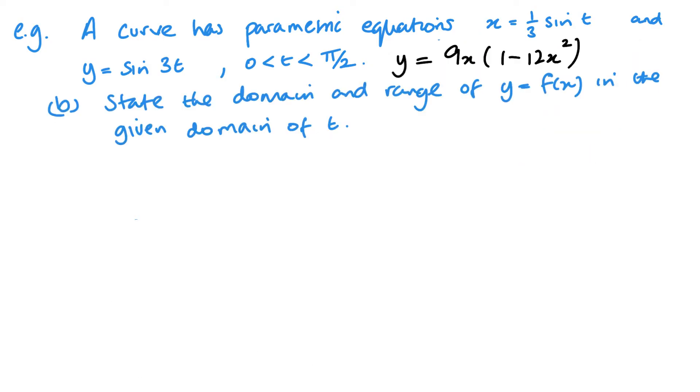We want to find the domain and range. We need to use this domain of t, which we can see is between 0 and pi by 2. If I look at my x values, when I substitute 0 in, it's going to give me 0. And when I substitute pi by 2 in, it's going to give me 1 third of 1, which is going to be a third. So my domain is going to be between 0 and 1 third.